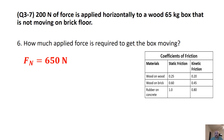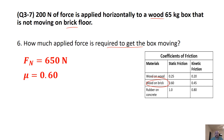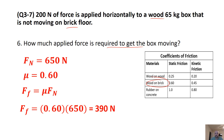How much force is required to get the box moving? We take our normal force of 650 newtons, and since we're dealing with wood on brick, we use the static friction coefficient from the table. When we solve for the force of friction, this is the maximum force required to first get the block moving, so slightly more than 390 newtons would be required.